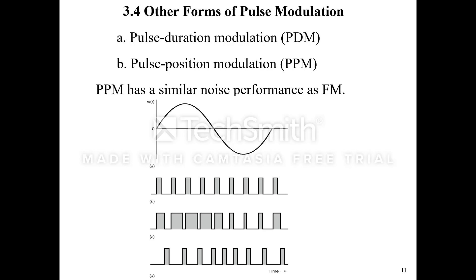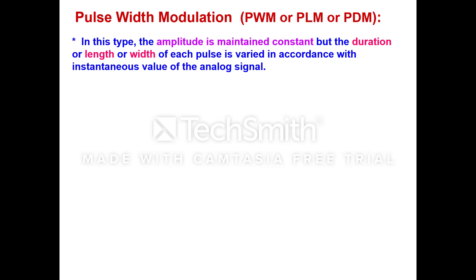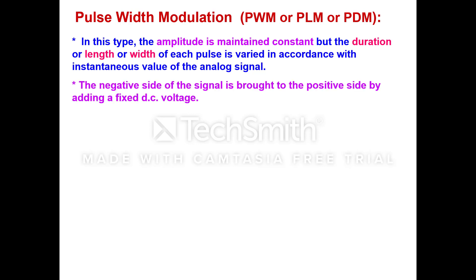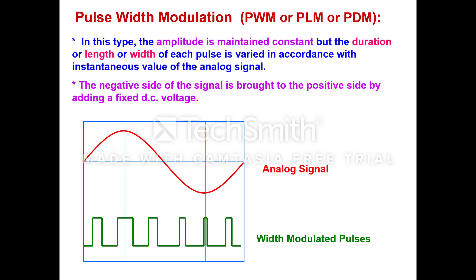Now we come to the other forms of pulse modulation: pulse duration modulation and pulse position modulation. Pulse position modulation has a similar noise performance as FM. Pulse width modulation is also called pulse length modulation or pulse duration modulation. In this type, the amplitude of the pulse is maintained constant but the duration, length, or width of each pulse is varied in accordance with the instantaneous value of the modulating signal. The negative side of the signal is brought to the positive side by adding a fixed DC voltage. This is the modulating signal and these are the width modulated pulses.